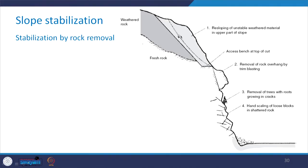This was all about the stabilization of the rock slope using reinforcement techniques. Slopes can also be stabilized by the removal of rock. This figure gives you the idea about various steps adopted when stabilizing a rock slope by rock removal. Here you can see the boundary between fresh rock and weathered rock. The first step is to re-slope this unstable weathered material in the upper part of the slope — removing this portion to re-shape it.